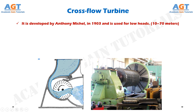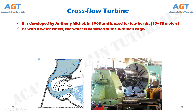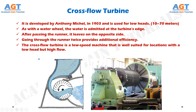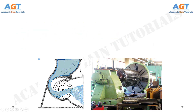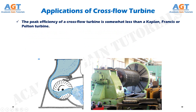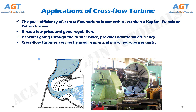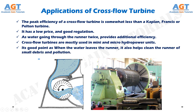The cross-flow turbine was developed by Anthony Michel in 1903 and is used for low heads of 10 to 70 meters. The water is admitted at the turbine's edge, and after passing the runner, it leaves on the opposite side. Going through the runner twice provides additional efficiency. The cross-flow turbine is a low-speed machine well suited for locations with low head but high flow. Its peak efficiency is somewhat less than a Kaplan, Francis, or Pelton turbine, but it has a low price and good regulation. Cross-flow turbines are mostly used in mini and micro hydropower units. When the water leaves the runner, it also helps clean the runner of small debris and pollution.